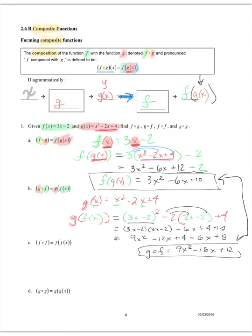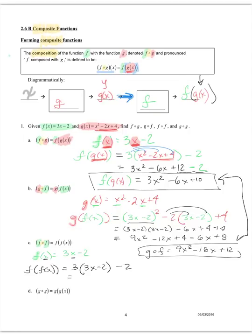We can also compose f with itself. Starting with f(x) = 3x − 2, we substitute f(x) in for x everywhere: 3(3x − 2) − 2 = 9x − 6 − 2 = 9x − 8. So f composed with itself is 9x − 8.